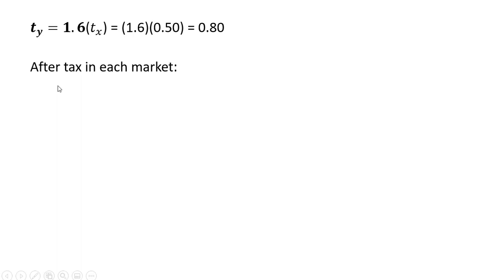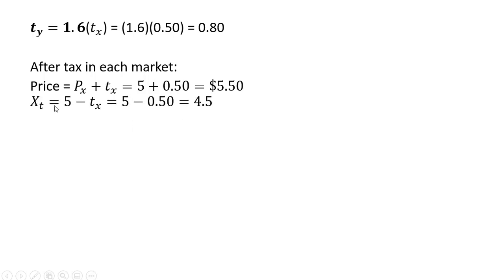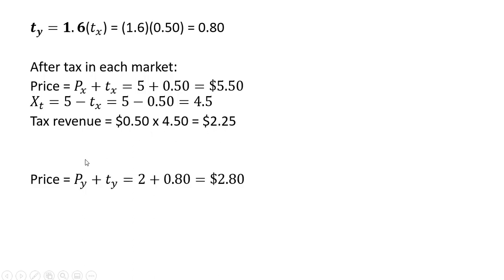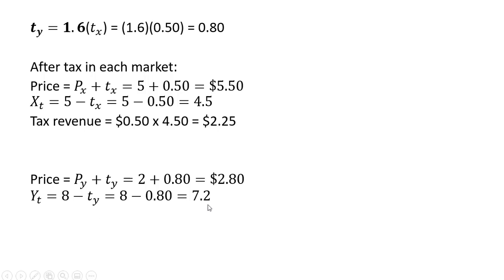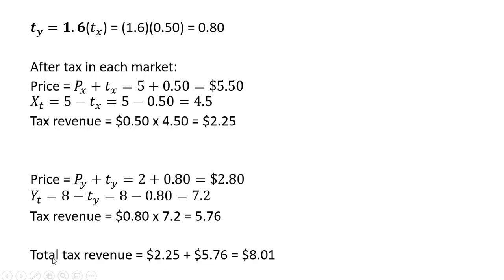After the tax, consumers in good X's market pay $5.50 per unit, and as a result consumers will buy only 4.5 units. The tax revenue the government collects in the market for good X is $2.25. In the market for good Y, consumers pay $2.80 a unit — $2 to the sellers and $0.80 to the government — and 7.2 units will be purchased after taxes. Government tax revenue from this market is $5.76, so total tax revenue is indeed $8.01.